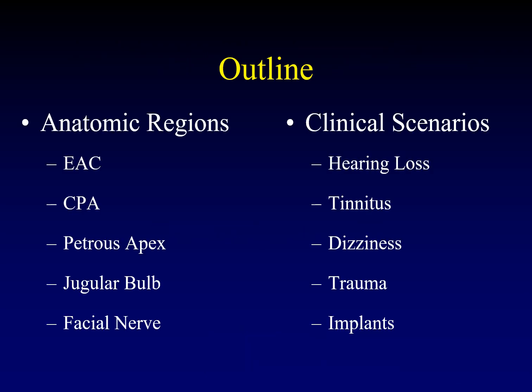How do you cover anything as massive as the temporal bone? We're going to try to do it by breaking it down into anatomic regions: the external auditory canal, cerebellopontine angle, the petrous apex, jugular bulb, and facial nerve, and then run through some clinical scenarios like hearing loss, tinnitus, and dizziness, trauma, and then a discussion of the implants that you might find in the temporal bone.